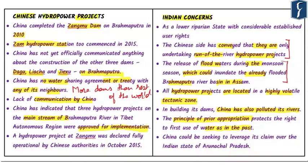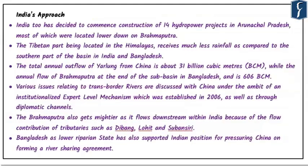An important concern is China's claim on Arunachal Pradesh. By building dams especially near the great bend — after which the river flows into India through Arunachal Pradesh — China could be seeking to leverage its claim over the Indian state of Arunachal Pradesh. These are the key concerns India has raised regarding Chinese hydropower projects.